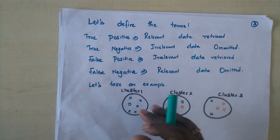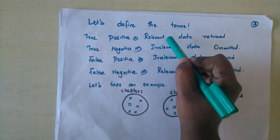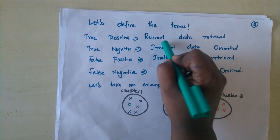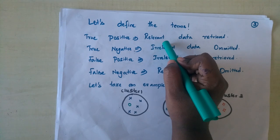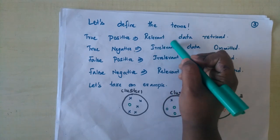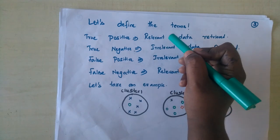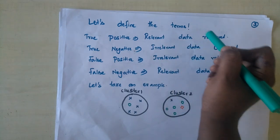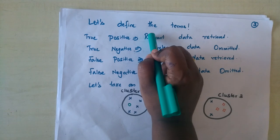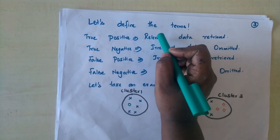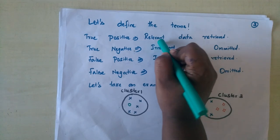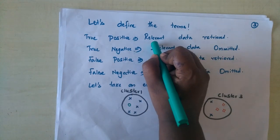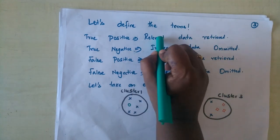Let's understand what these terms mean. True positive means relevant data is retrieved. For example, say we have a cluster that mostly consists of sports category documents. When a sports category document is supposed to get into this cluster and it successfully does, we have retrieved relevant data into the sports cluster. That is what a true positive means — assigning relevant data into the correct cluster.